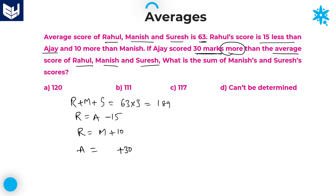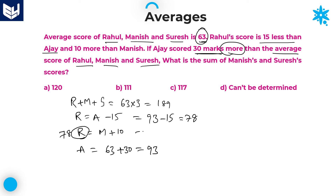The average of those three members is 63, so Ajay scored 63 plus 30, which equals 93. Since Rahul is 15 less than Ajay, Rahul equals 93 minus 15, which is 78. Since Rahul is 10 more than Manish, Manish equals 78 minus 10, which is 68.